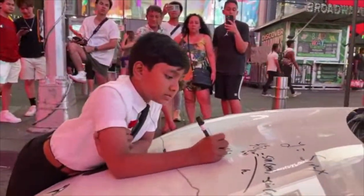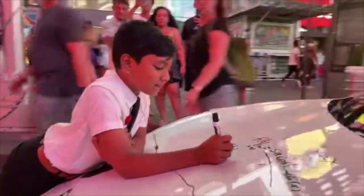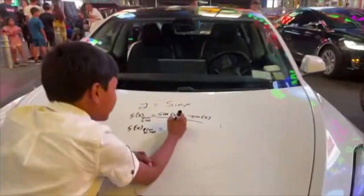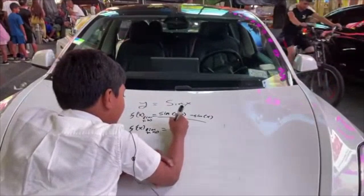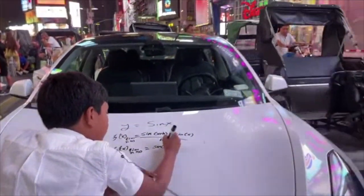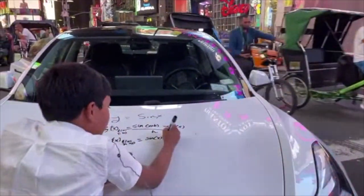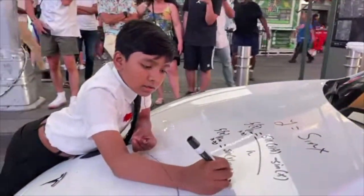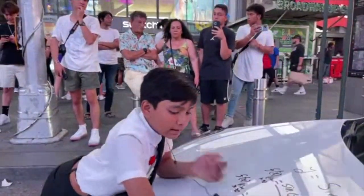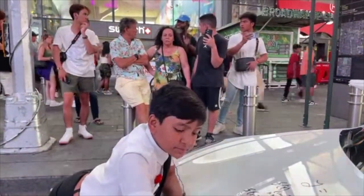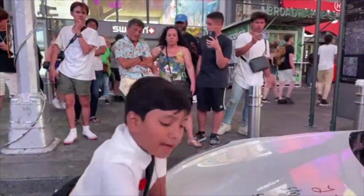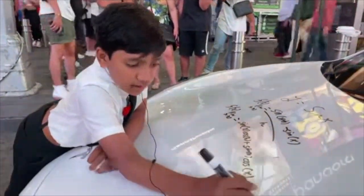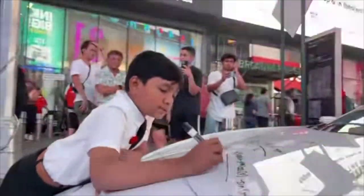It's actually pretty good to know that for sine of two angles, sine of x plus h is going to be equal to sine of x times cosine of h, plus sine of h times cosine of x. So we write that out: cosine of x minus sine of x over h.